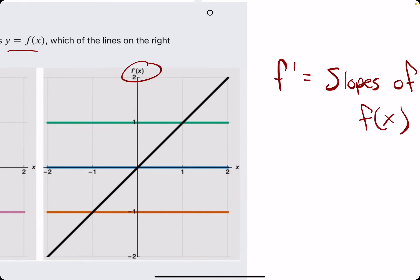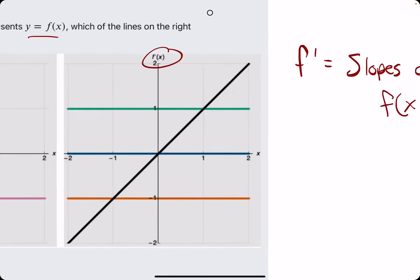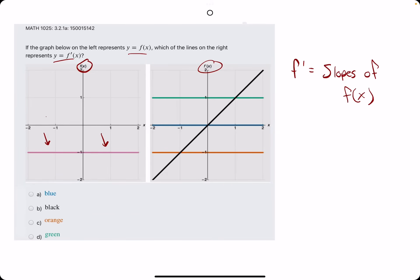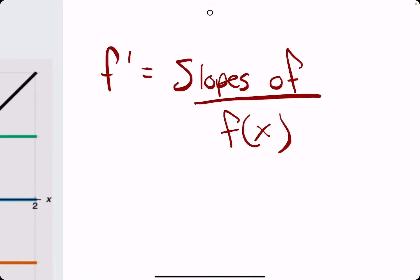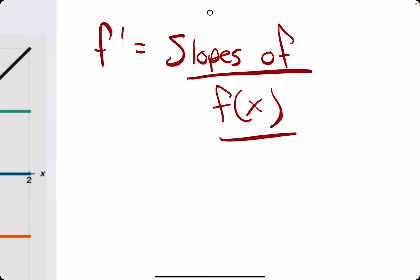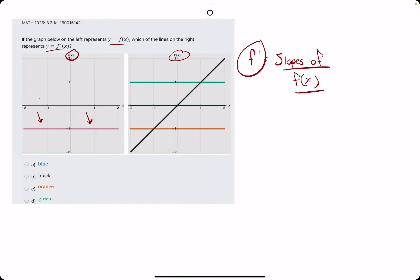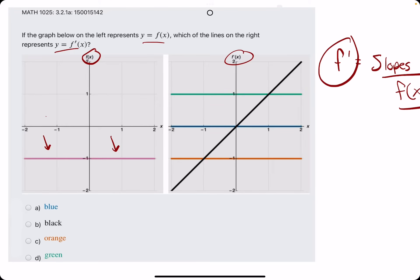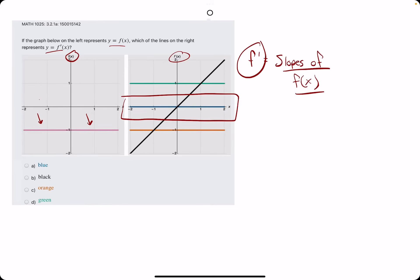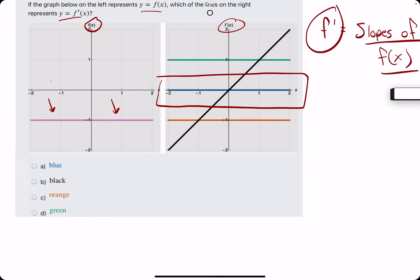then we're looking for the graph over here, the color over here, that has a y value of zero, because it's the slopes of f(x) that corresponds to the y values of f prime. We're looking for the one with a y value of zero. That is the blue function. Break out the eraser to see that blue is our answer.